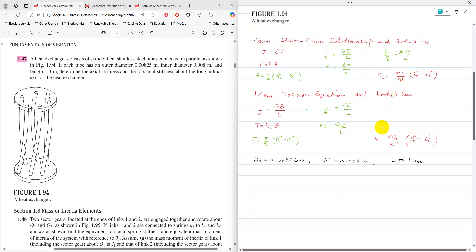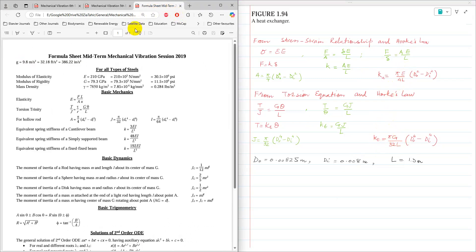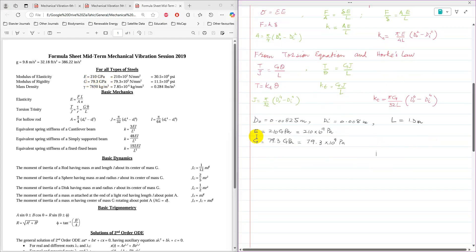We need modulus of elasticity, and to find torsion stiffness we need modulus of rigidity. For steel, modulus of elasticity is 210 Giga Pascal and modulus of rigidity is 79.3 Giga Pascal. I am going to use E as 210 Giga Pascal and G as 79.3 Giga Pascal.